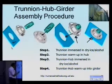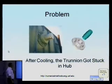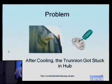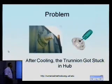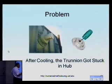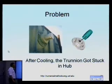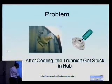So what's the problem? On one of the bridges, as they cooled down the trunnion and tried to put it into the hub, it got stuck. Luckily, they were able to take it out before it got stuck for good. Had it gotten stuck permanently, it would have cost about $50,000 for a new trunnion, plus about a month of delay in construction to make a new one and reassemble it.